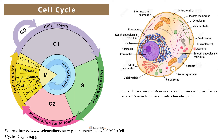DNA synthesis and replication occur in S phase, and the centrosome is also replicated in S phase. G2 phase is also a growth phase where further proteins are synthesized and cell growth continues, preparing the cell for mitosis or cell division.